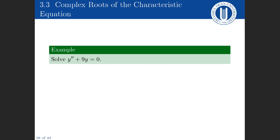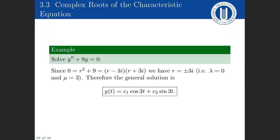Another example: solve y double prime plus 9y equals zero. The characteristic equation is r squared plus 9 equals zero, giving r equals plus or minus 3i. So lambda equals zero and mu equals 3. The general solution is c1 cos(3t) plus c2 sin(3t).